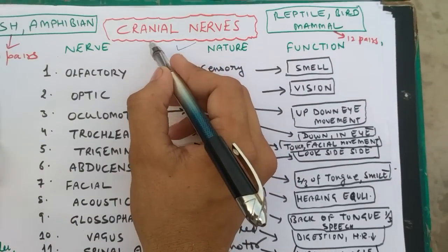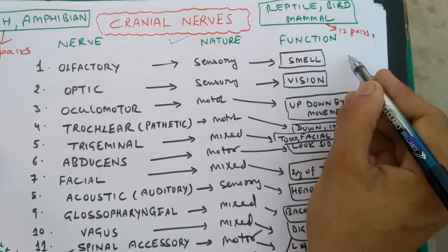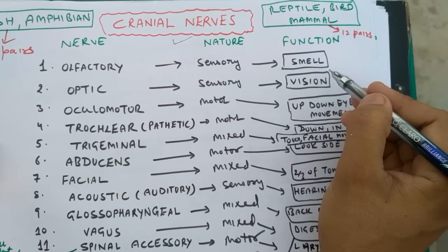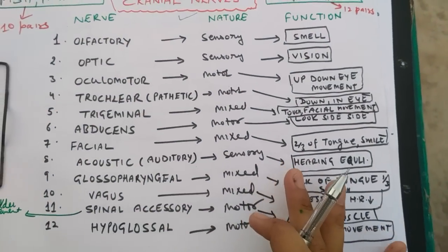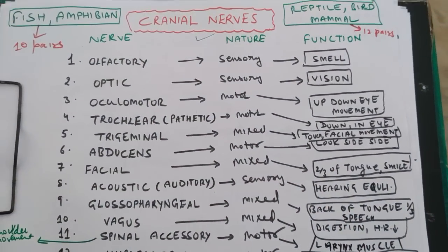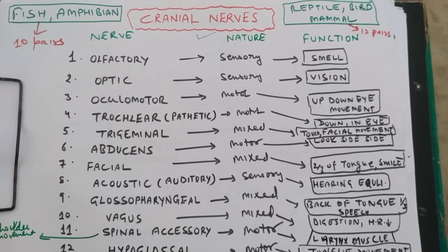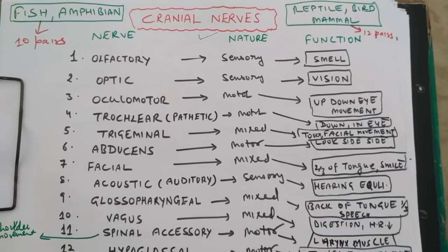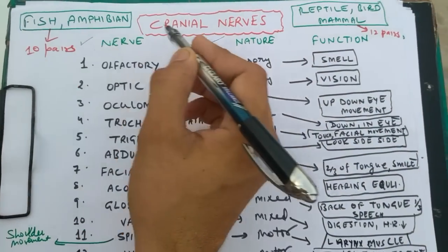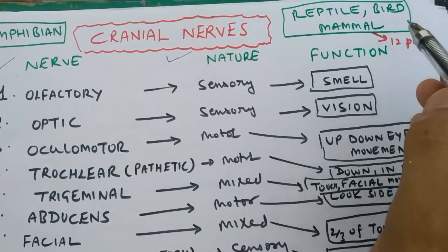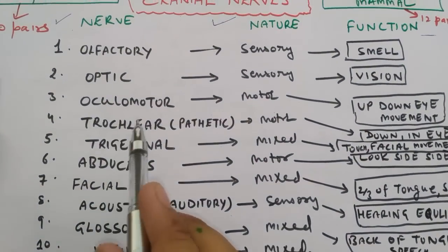First of all, I'll discuss what are the cranial nerves. Cranial nerves are actually the nerves that arise from the brain and they are limited up to the brain. There is only one nerve that extends out of the brain, that is the vagus. All other nerves are contained in the brain. In fish and amphibian there are 10 pairs of cranial nerves, and in reptiles and mammals there are 12 pairs of cranial nerves.